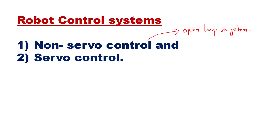Non-servo robots are the simplest form of all, and they are often referred to as limited sequence robots, which can have a limited sequence of actions. They can also be referred to as pick and place robots, which pick a thing from one point and place it on another, or as fixed stop robots. The non-servo robot is an open loop system — there is no feedback mechanism, meaning no connection between output status and the input. Non-servo robots move their arm in an open loop fashion between exact end positions on each axis.